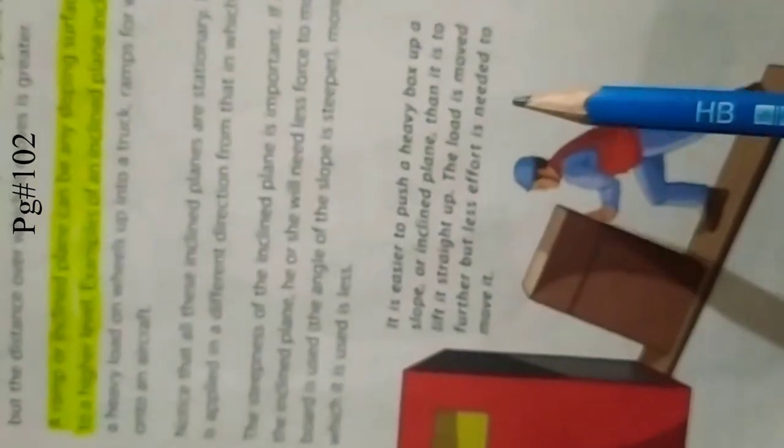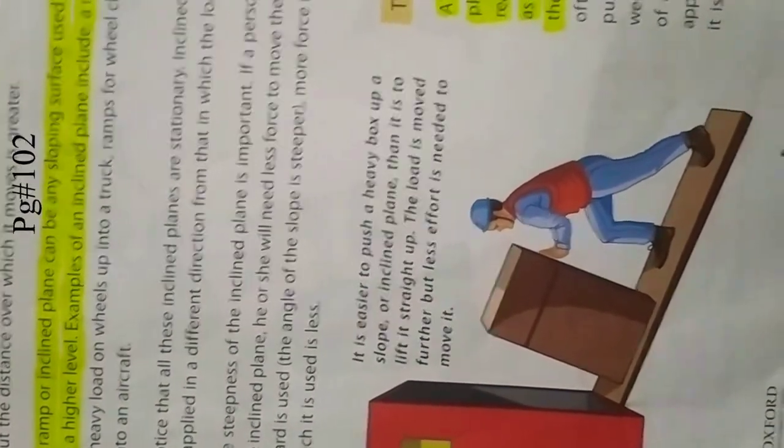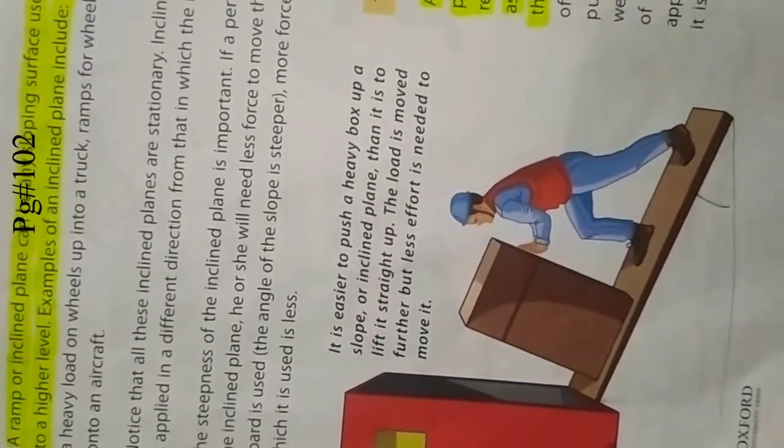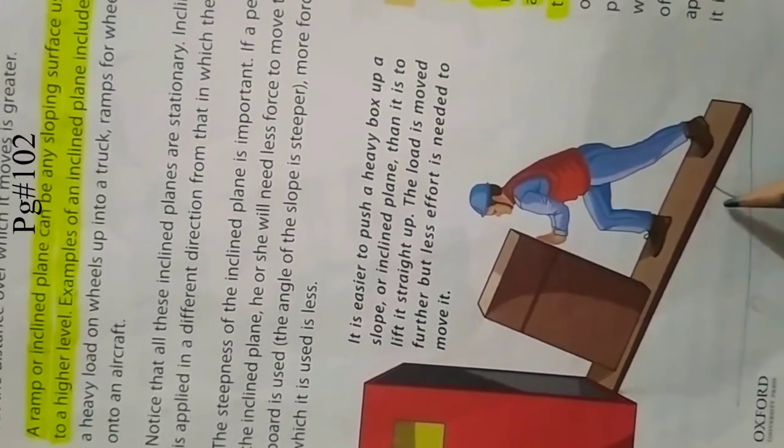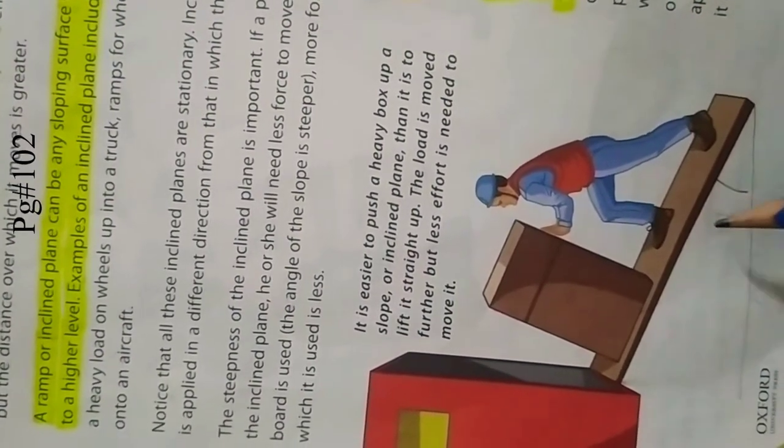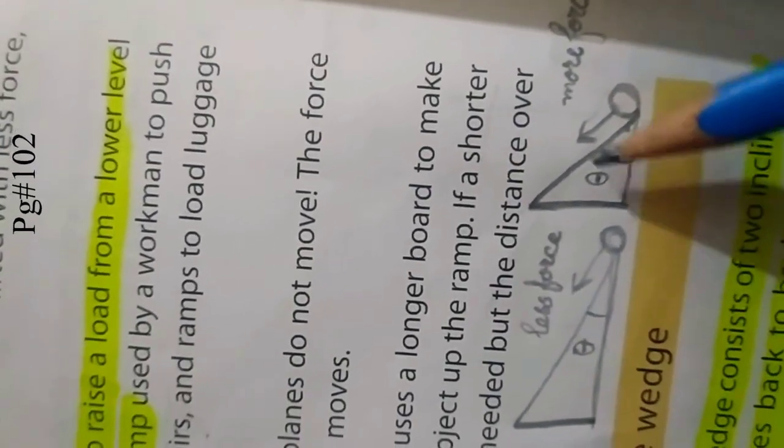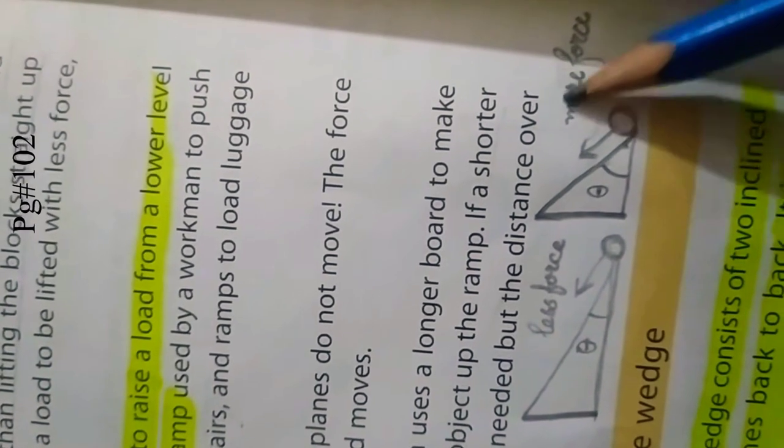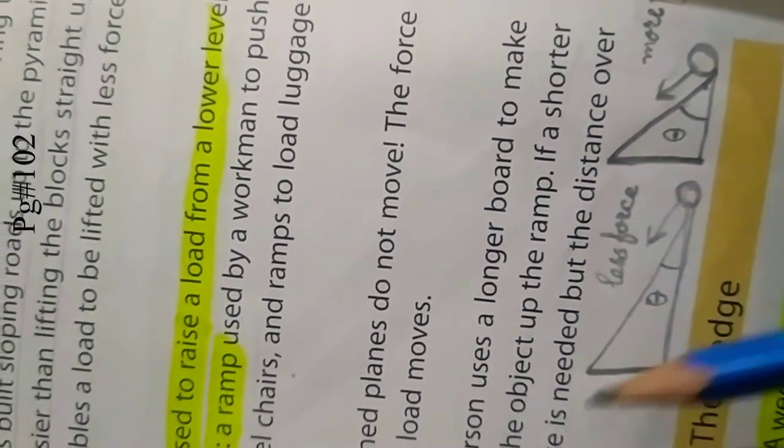Now let me explain you one more thing. See, this inclined plane is making an angle with the horizontal surface. If you see this is ground or horizontal surface, then it is making an angle. As this angle will increase, this person has to put more effort. If the angle will be more, if the surface will be more steep, more effort will be required, more force will be required. If the angle is lesser, less force will be required to lift up this load. Is that clear?